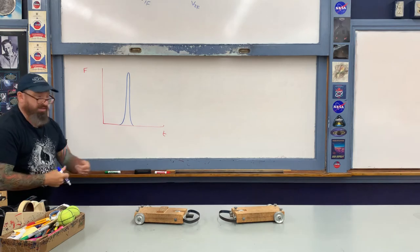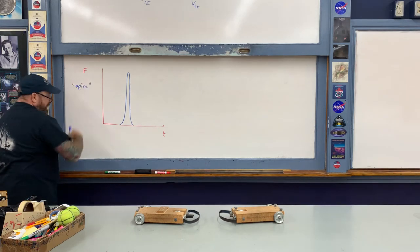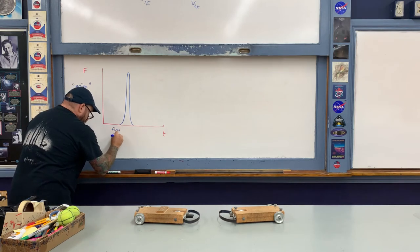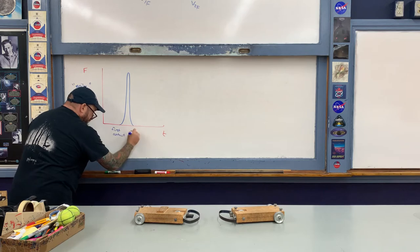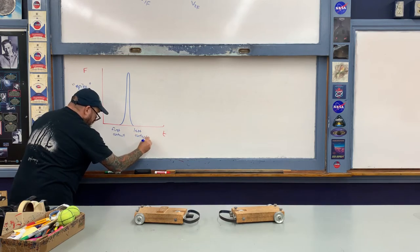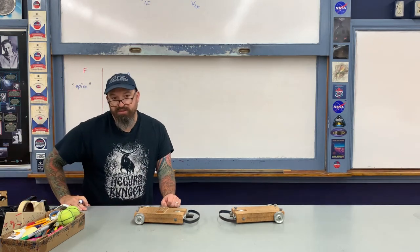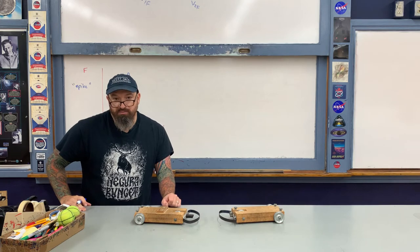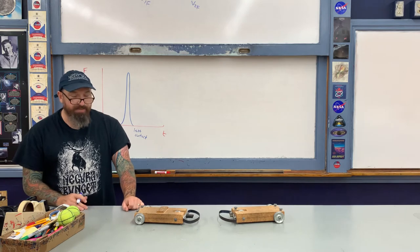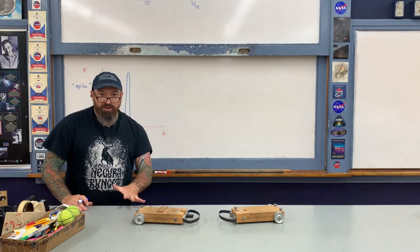That produces a very characteristic graph — a spike, as it's sometimes nicknamed. Right here is the point of first contact, and right here is the point of last contact. The total amount of time over which the collision occurs is usually a few hundredths or a few thousandths of a second, as with the baseball and the baseball bat.